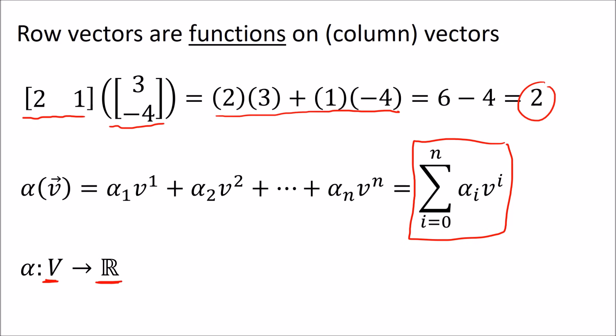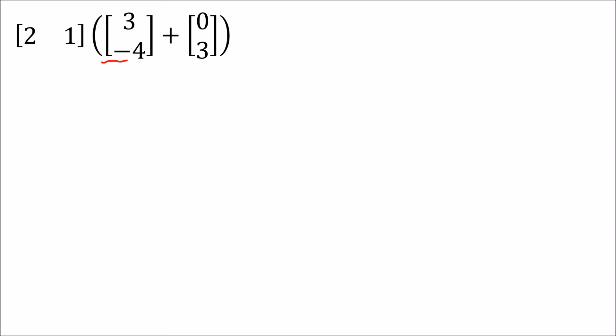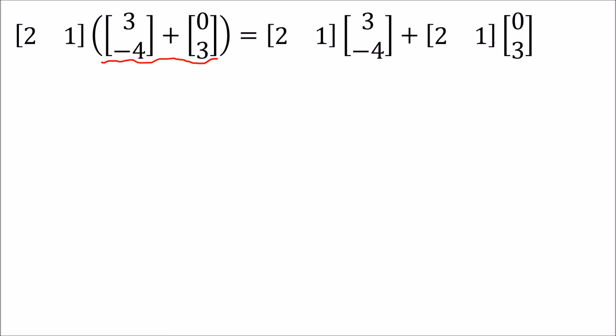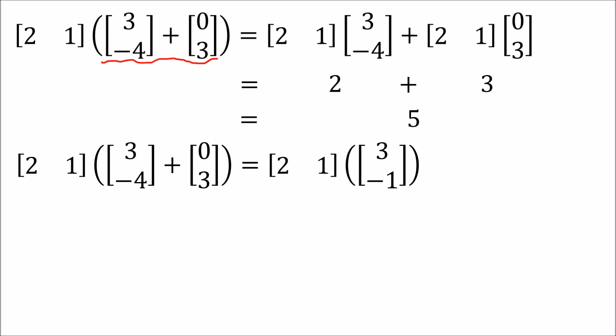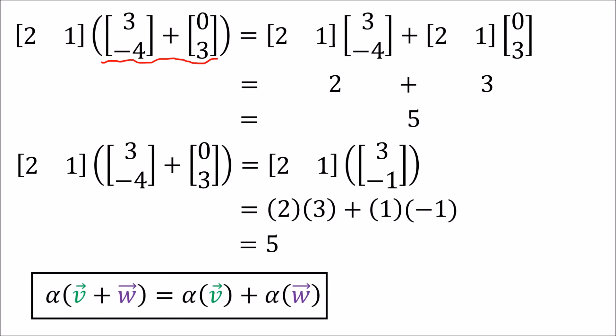Let's examine how these row vector functions work a little bit more. If we have a row vector acting on two vector inputs that are added together, there are two ways to calculate the output. One way is to distribute the row vector to each of the inputs and then add the results. The other way is to add the inputs together and then have the row vector operate on the combined column vector. Both ways give the same output, so row vectors have the property that we can add inputs before or add outputs after and get the same result.